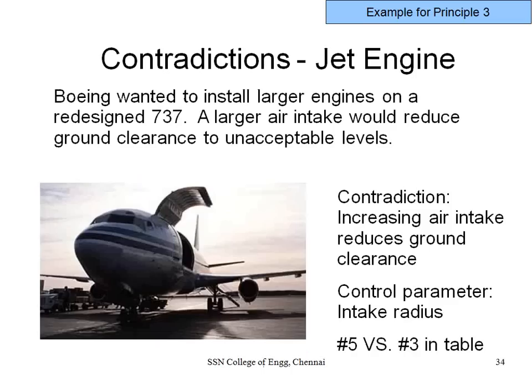Here is a real-life Boeing 737 problem. The plane is large, requiring a large air intake and large fan. But a large fan means a large diameter, which reduces ground clearance. The contradiction: I want a large fan for good draft, but a small fan for ground clearance. A very clear contradiction — so we go to the contradiction matrix.